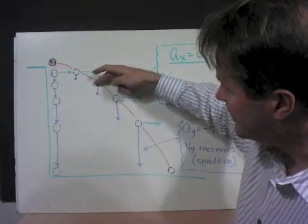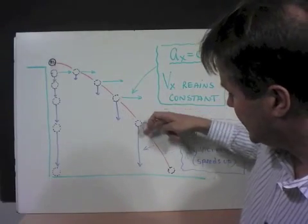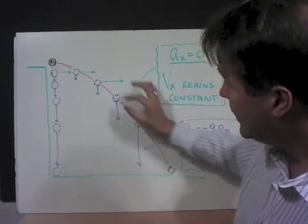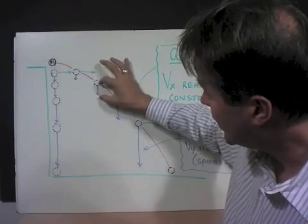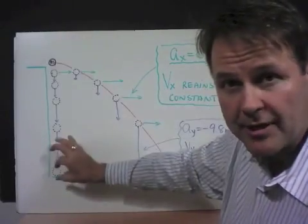2 tenths of a second, again as if we just dropped it, 3 tenths of a second, 4 tenths of a second, 5 tenths of a second. And you see the amount that the object falls is identical to as if we just dropped the object.